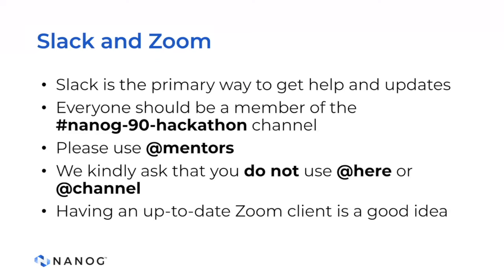Ways to communicate with not only the mentors but the rest of the participants: Slack is the primary way. Everyone should be a member of the NANOG90 Hackathon Slack workspace. If you're not, feel free to either email us or raise it here in chat. Once you're a part of that Slack, you can use @Mentors to contact anyone on the committee for support. We kindly ask that you do not use @here or @channel mentions, as that can disrupt people's flow. We also suggest that you have an up-to-date Zoom client before the competition starts, especially if you're participating remotely.